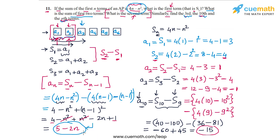You can verify this expression is correct by substituting different values of n. For n equal to 1: 5 minus 2 equals 3, which matches A1. For n equal to 2: 5 minus 4 equals 1, which matches A2. For n equal to 3: 5 minus 6 equals minus 1, which matches A3. For n equal to 10: 5 minus 20 equals minus 15, which matches the tenth term we calculated. So the expression for the nth term, 5 minus 2n, is correct.